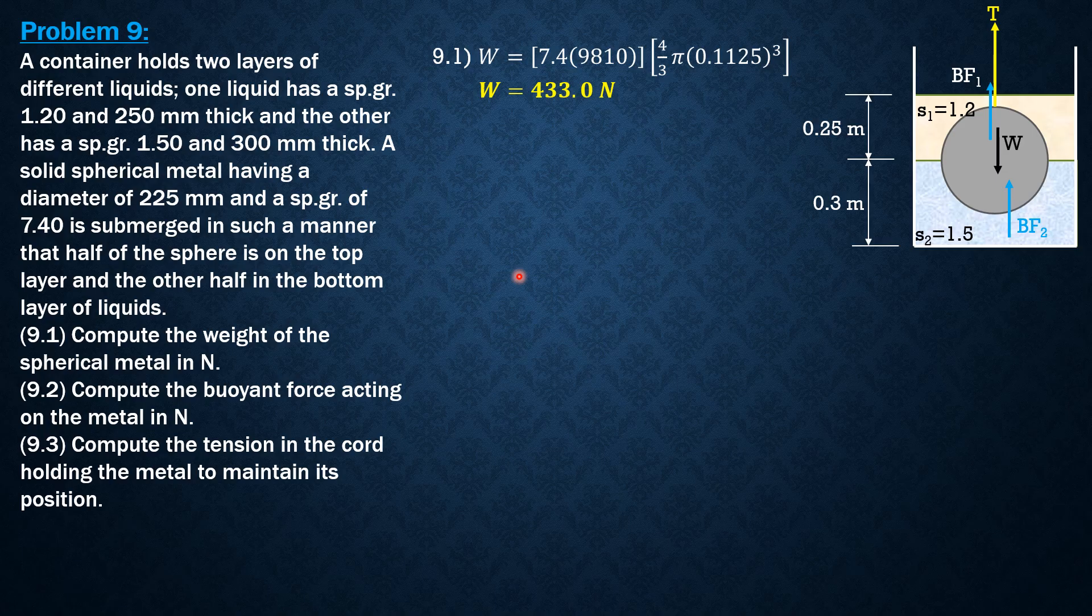For the second part, compute the buoyant force acting on the metal. There are two parts: BF1 and BF2, so the buoyant force is BF1 plus BF2. The volume on the upper part is just half the volume of the sphere, so it is 1.2 times 9.810 times 2/3 π times 0.1125³.